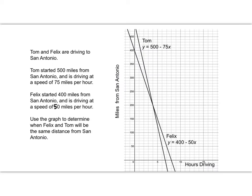So here's a scenario where two guys are driving to San Antonio. So Tom started 500 miles from San Antonio and is driving at a speed of 75 miles per hour. Felix started 400 miles from San Antonio and he is driving at a speed of 50 miles per hour. So there's the line that represents Tom's distance and here's the line that represents Felix's distance. What we want to know is where are they going to be when they will be the same distance from San Antonio? When will that happen? Reading the question exactly, use the graph to determine when Felix and Tom will be the same distance from San Antonio.